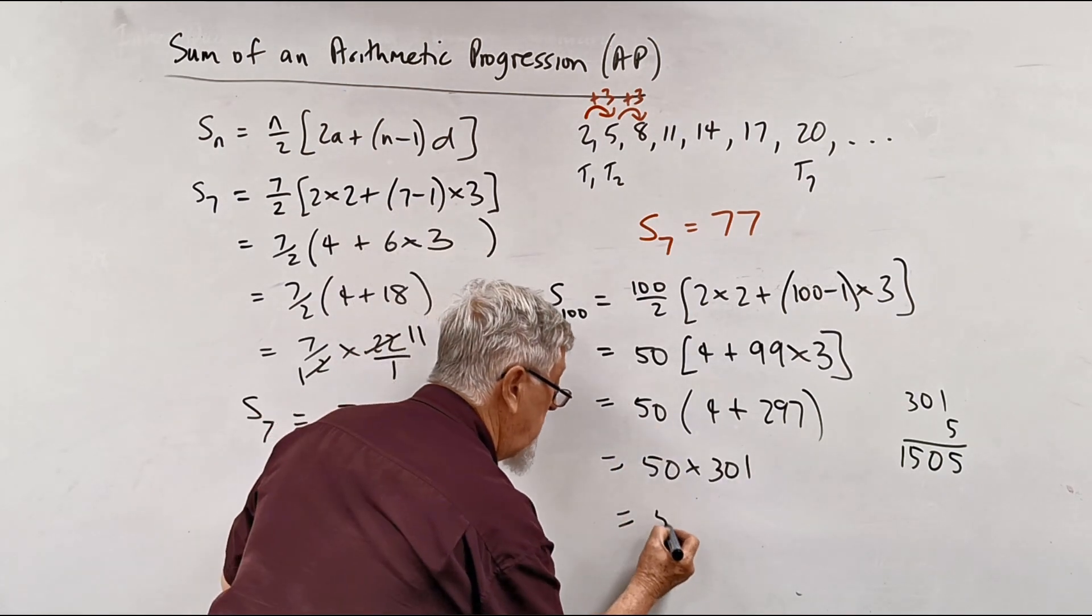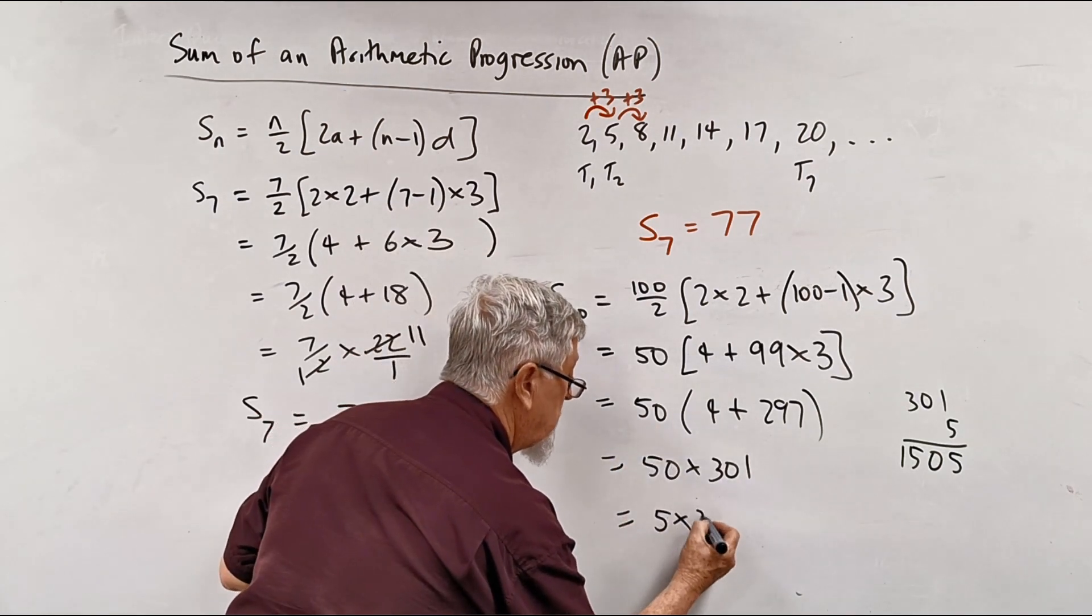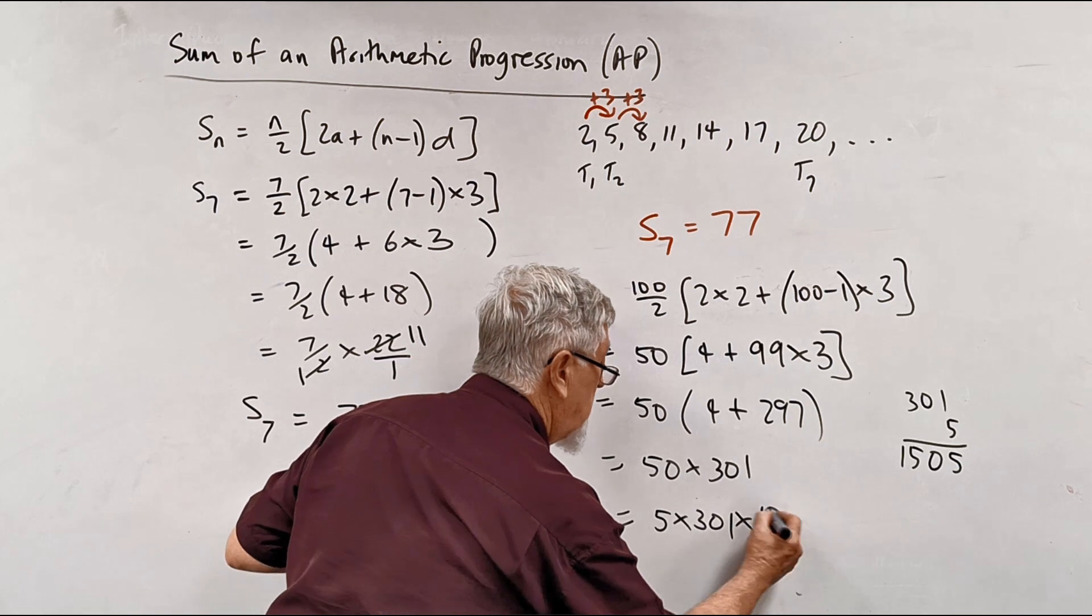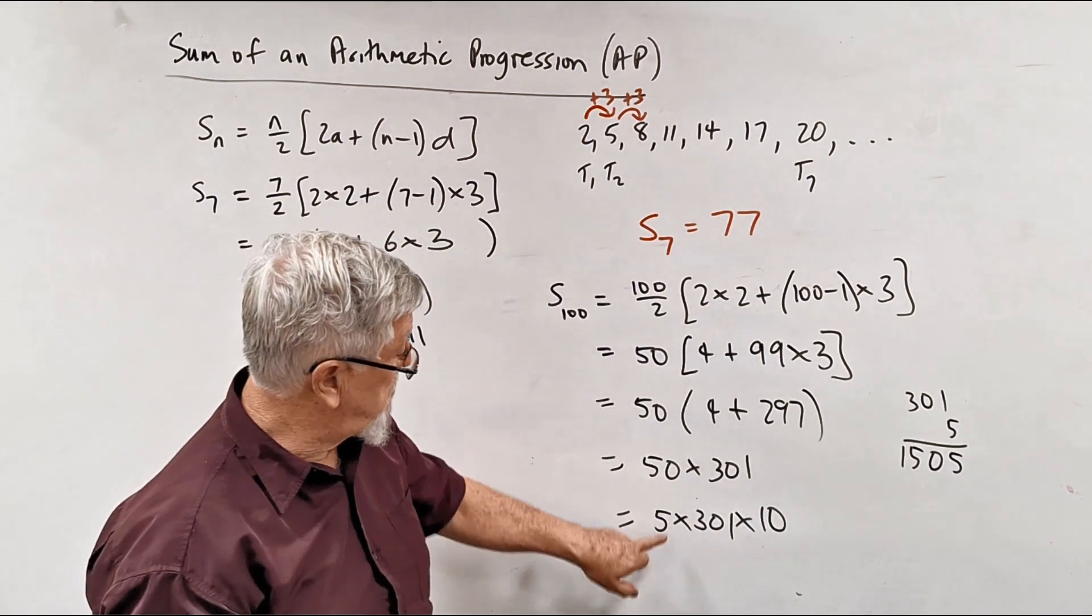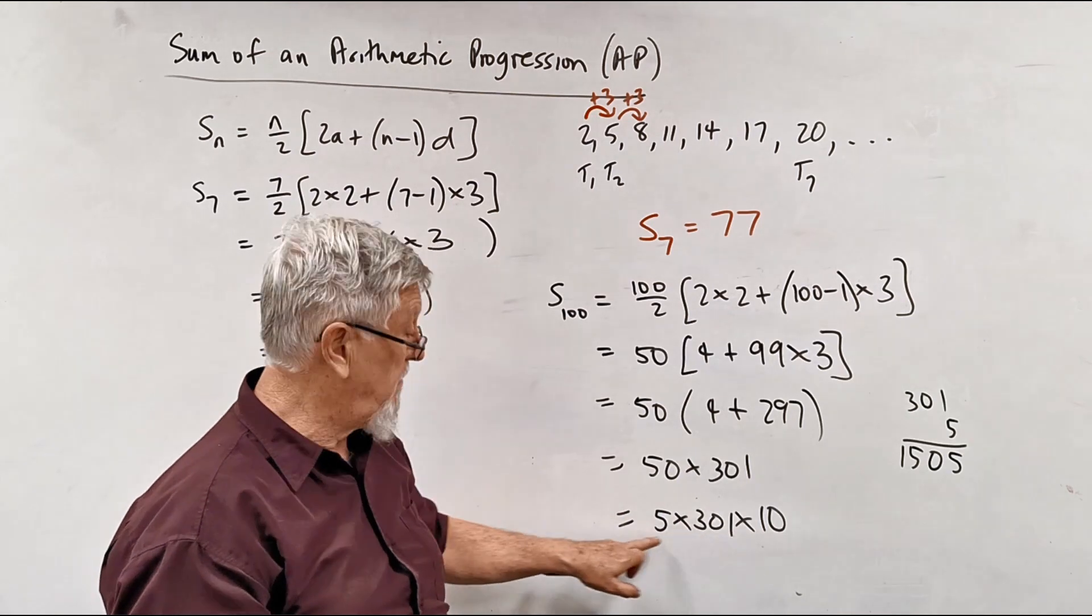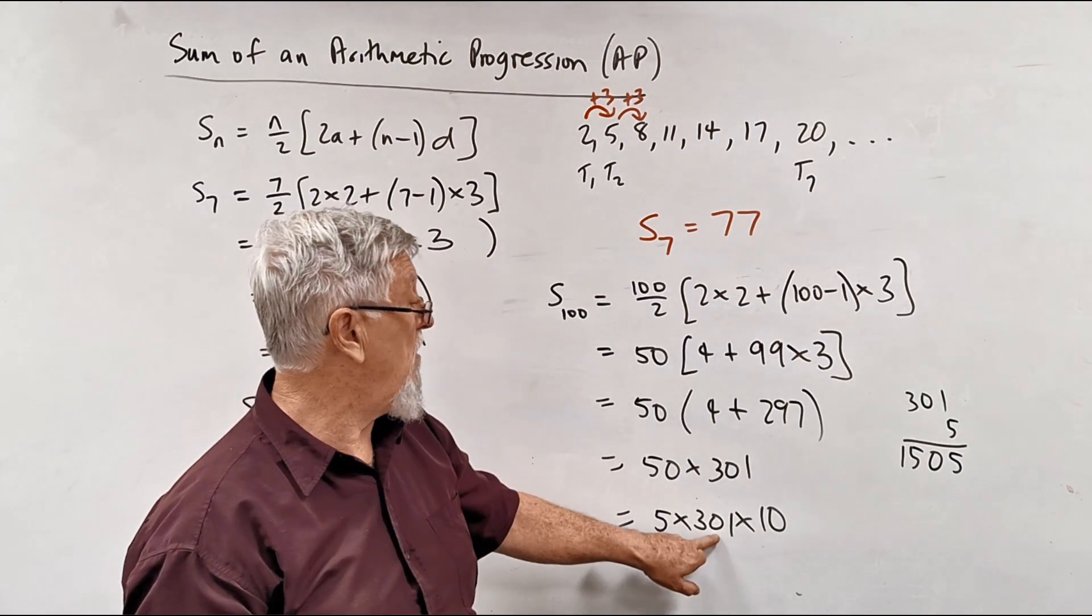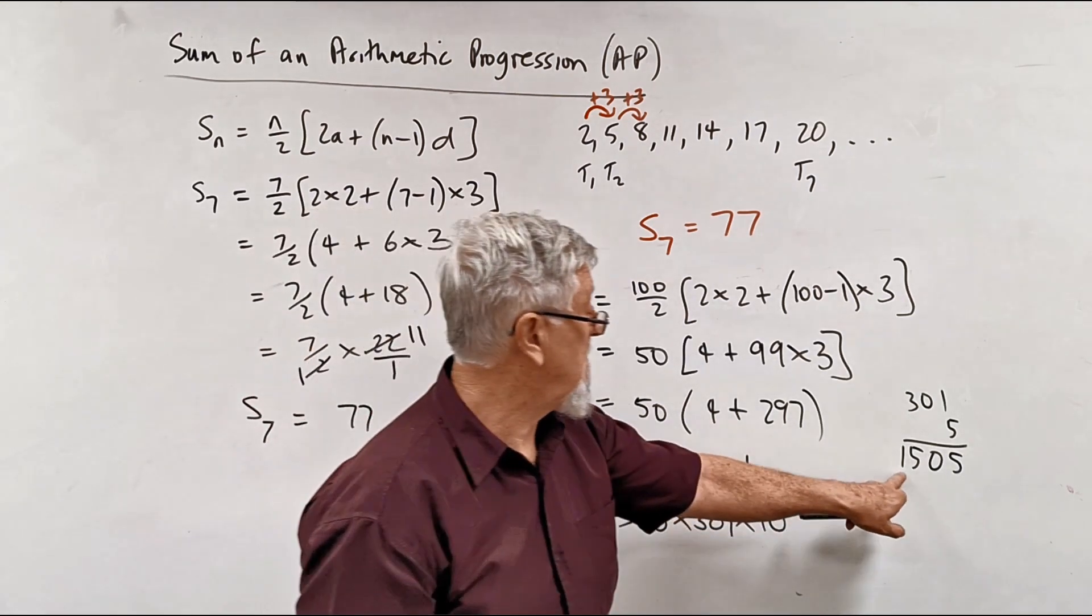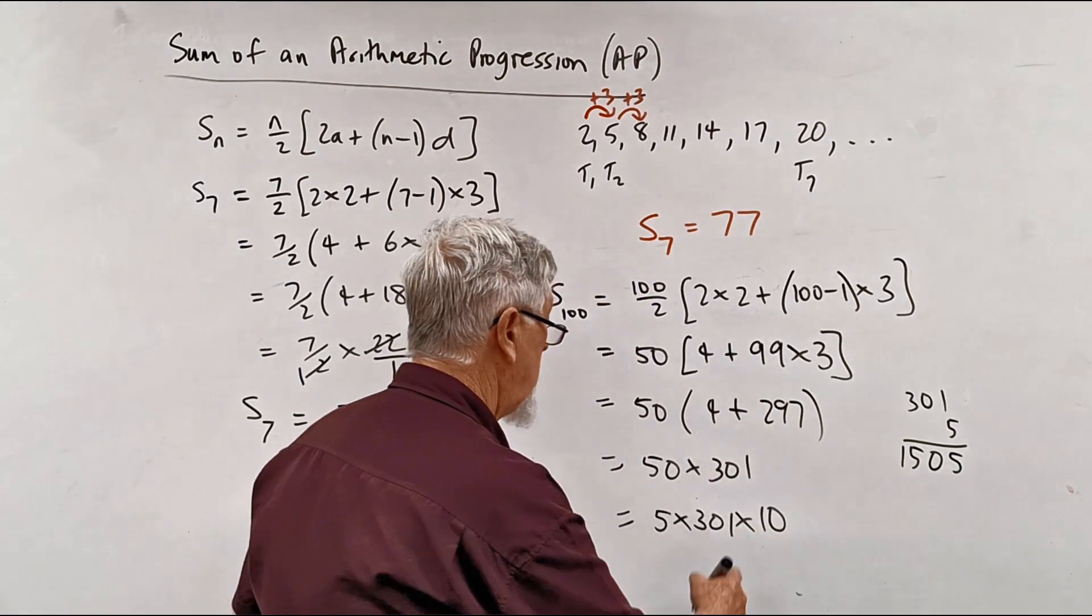So maybe for some people, if I showed you that's 5 times 301 times 10, and you've never thought about it, 50 is just 5 times 10. So I don't worry about the 10, I just do the simple multiplication that's here.